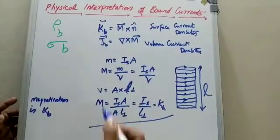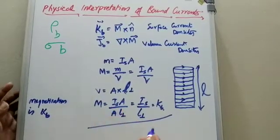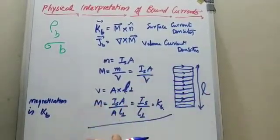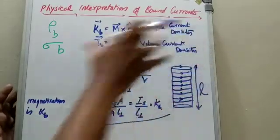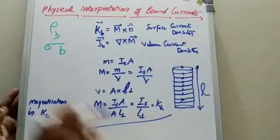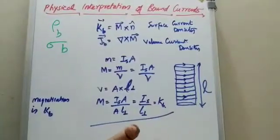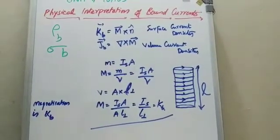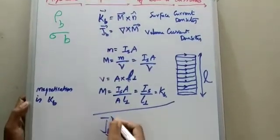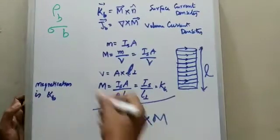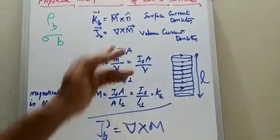If the magnetization is not uniform, the internal currents no longer cancel. Then there is another consideration: the volume bound current density Jb is equal to del cross M, which applies under non-uniform magnetization.